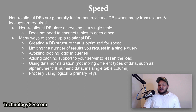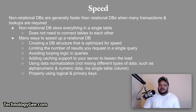Speed: non-relational databases are generally faster than relational databases when many transactions and lookups are required, because a non-relational database stores everything in a single table and does not need to connect tables to each other. However, there are many ways to speed up a relational database: create a database structure optimized for speed, limit the number of results in a single query, avoid looping logic in queries, add caching support to lessen the load, use data normalization — which means not mixing different types of data such as alphanumeric and numeric data in a single table column — and properly use logical and primary keys.